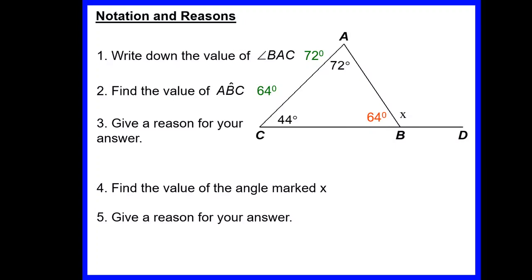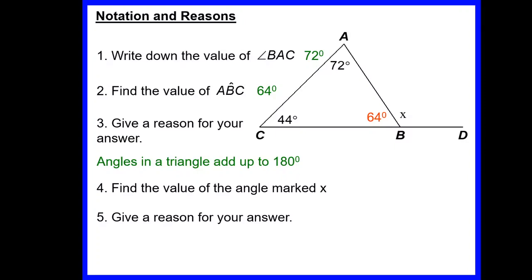How did we know that angle ABC was 64? When it says give a reason for your answer, it's expecting you to write down the rule you used. Hopefully we used the rule that in a triangle the angles add up to 180 degrees. So the reason is: angles in a triangle add up to 180 degrees. It's important to get that sentence nice and clear with those keywords — angles, triangle, and 180 degrees.